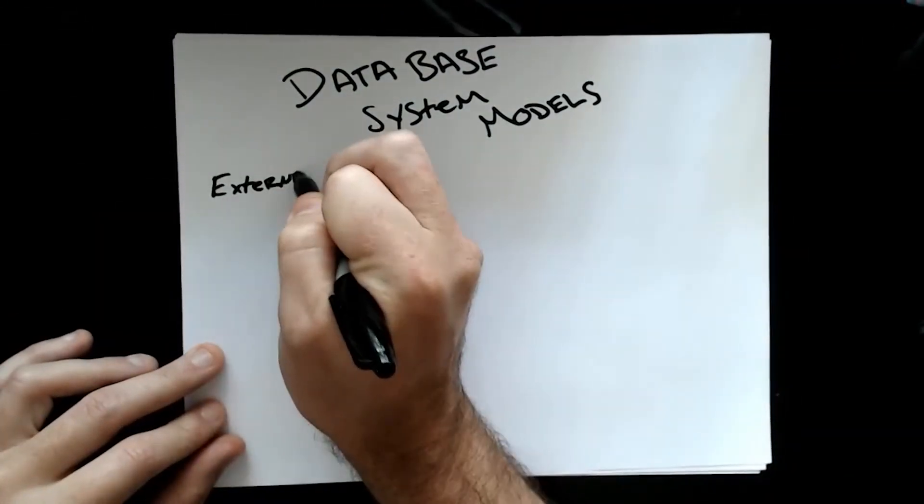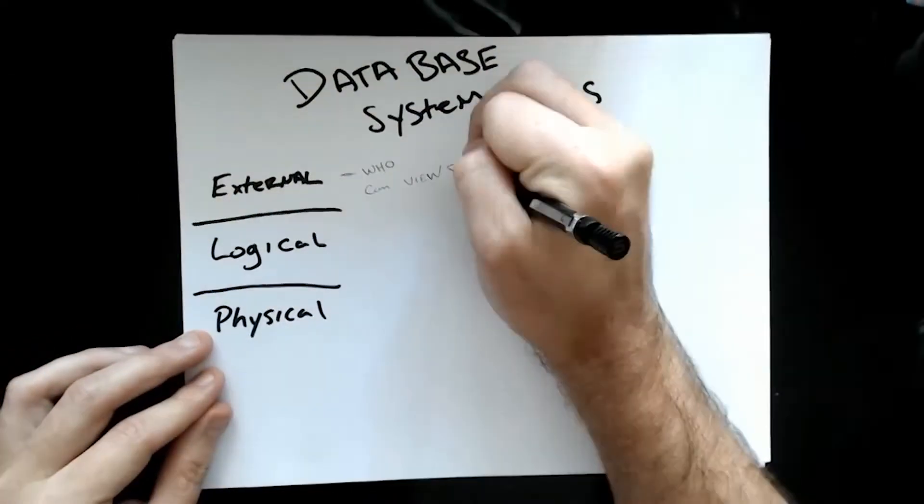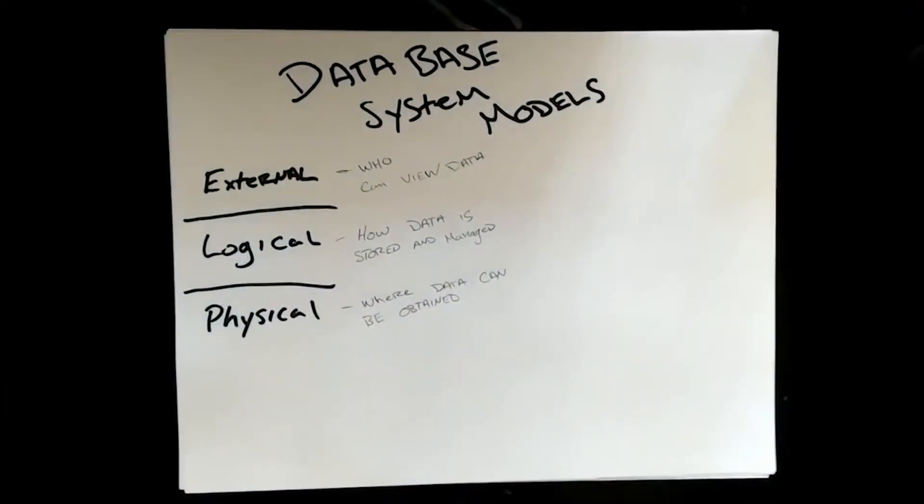These three layers make up a generalized database model, with the external layer that gives the user a view of the data, a physical layer where the data is stored, and the logical layer that determines the structure and organization of data.